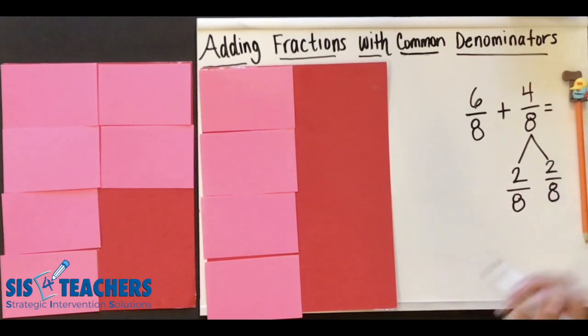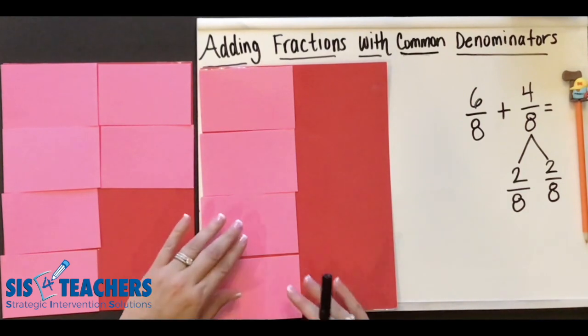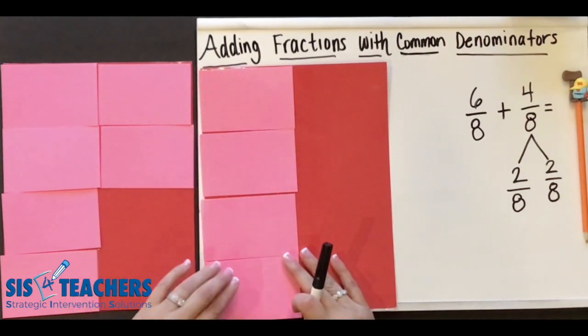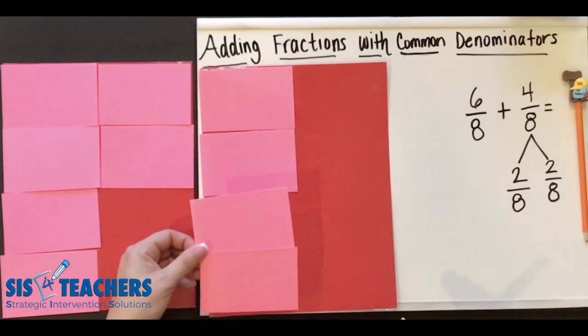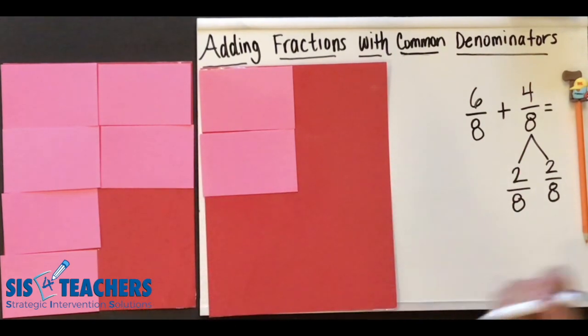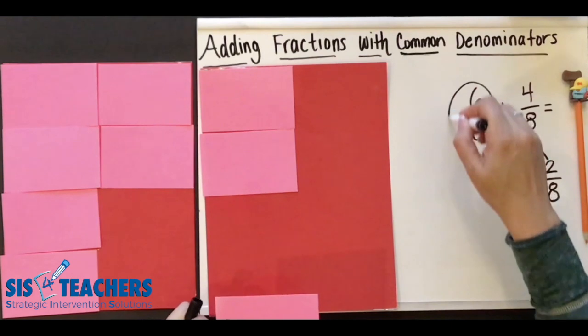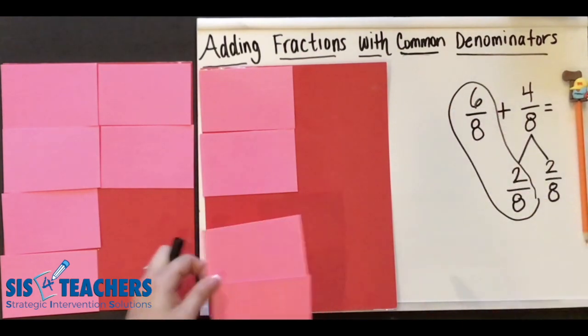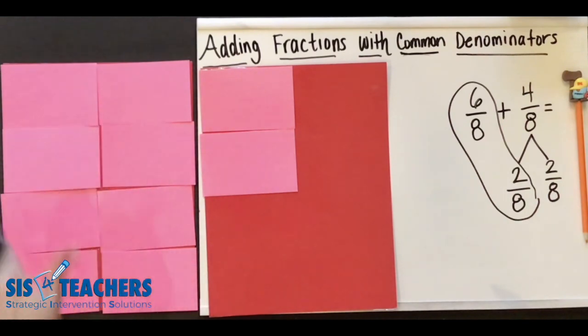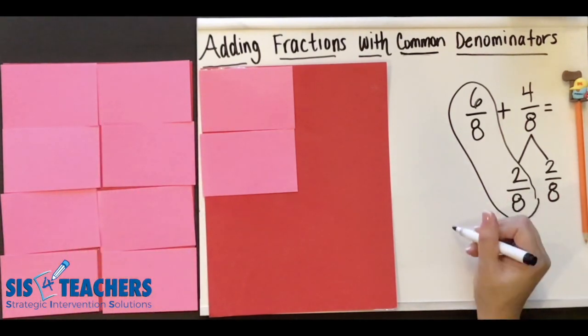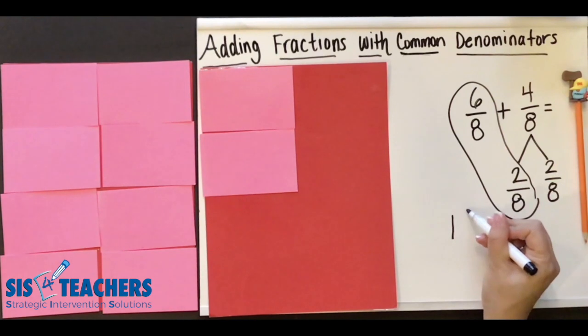If a student can't see that, you can look over here to see what we're referencing. We took that four eighths and essentially split it into two eighths and two eighths. When I'm combining this two eighths or composing this two eighths with my six eighths, I've now made one whole. I'm left over with two eighths.